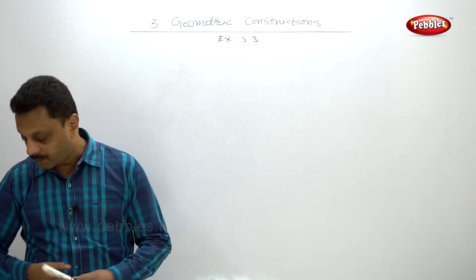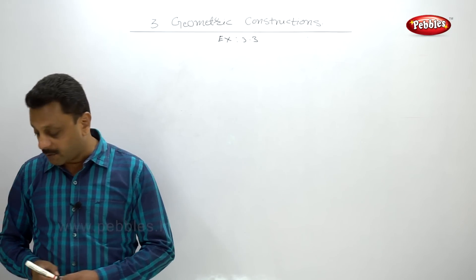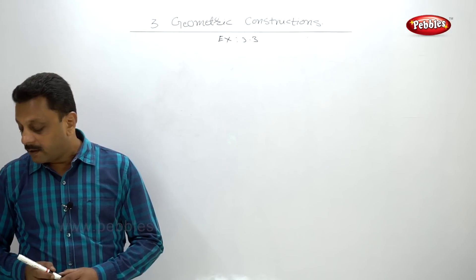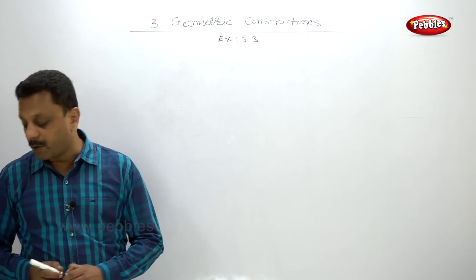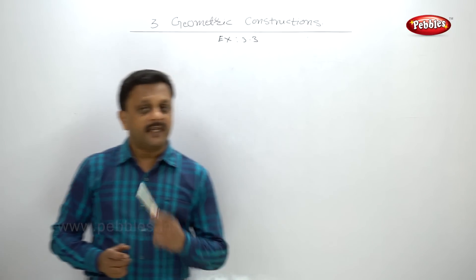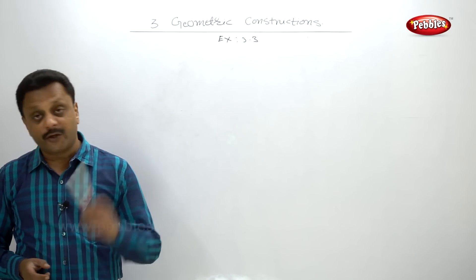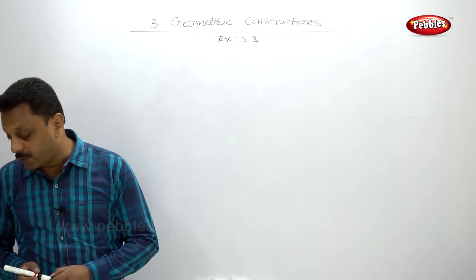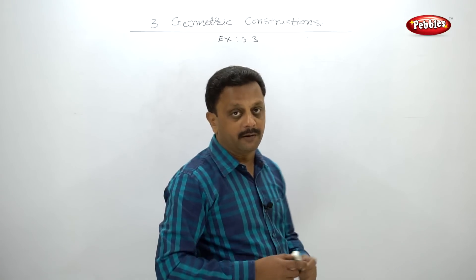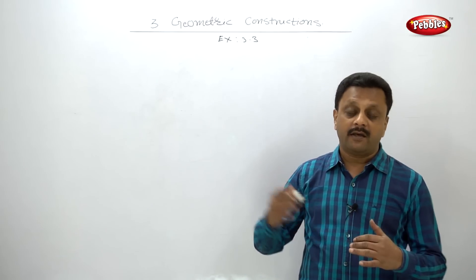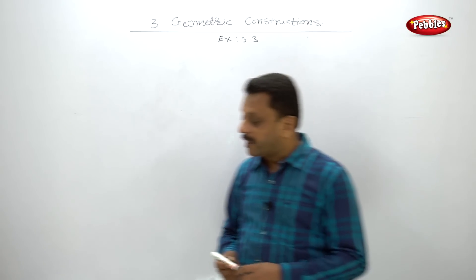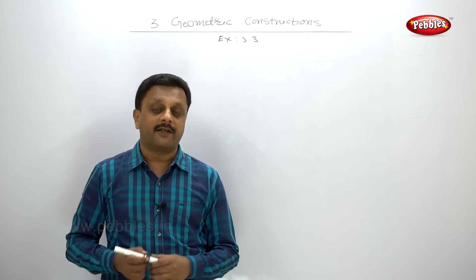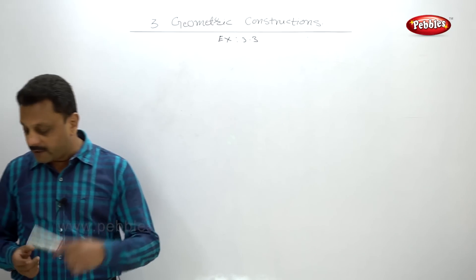Second problem: LMN and XYZ are similar triangles. In LMN, LM is 6, MN is 6.8, and LM is 7.6 — three sides are given, so you can easily construct this triangle. LM upon XY are in the ratio 4 is to 3, so the second triangle is smaller. Again, LMN and XYZ have no common vertex, so you have to calculate all sides by the ratio and then solve.